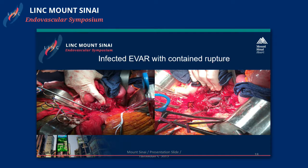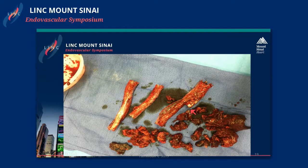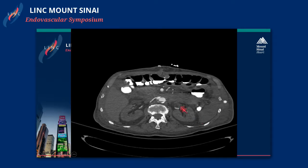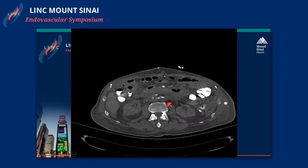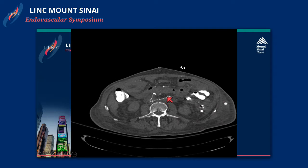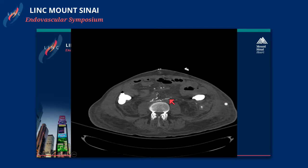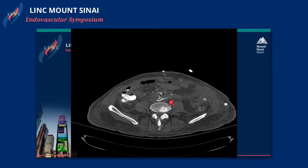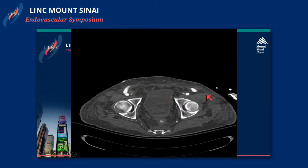We subsequently explanted the stent graft. You can see the stent graft and the aortic thrombus. This is the post-operative CT scan — you can see the axillo-bifemoral bypass and the ligated distal aorta. This is the residual aortic wall. This patient went on to make a full recovery, with initially some lymphatic leak that eventually resolved.